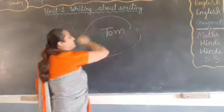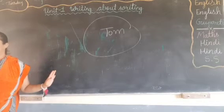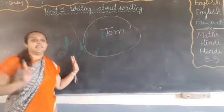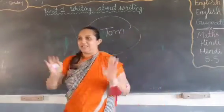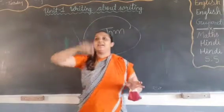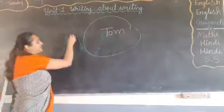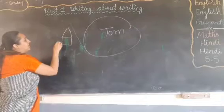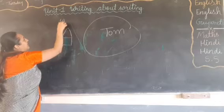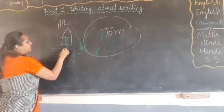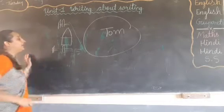The full chapter revolves around Tom — Tom is the main character. Tom is a small boy, similar to you students. He was given the work of painting a fence. Now, a fence can be on the back side or front side of a house — like a boundary wall or railing around the property.